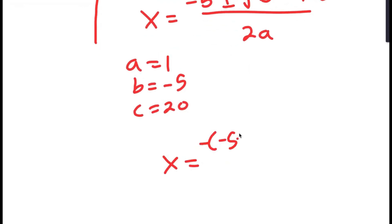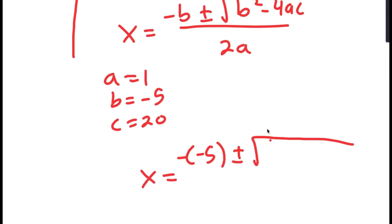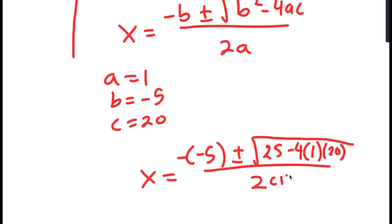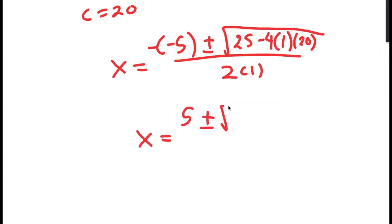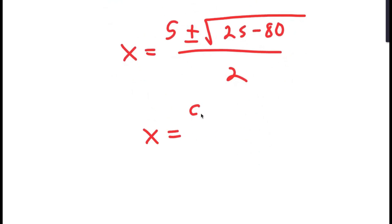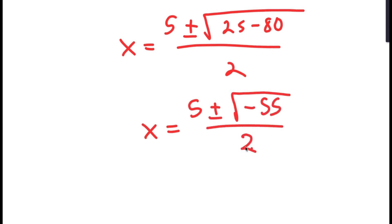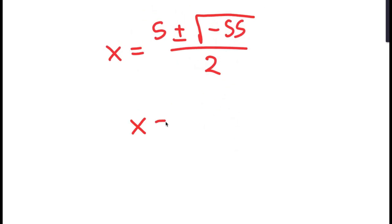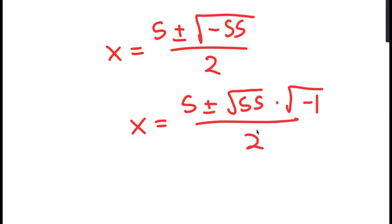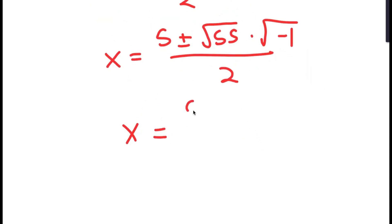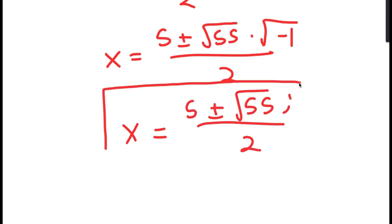Substituting, x equals negative(−5) plus or minus the square root of (−5) squared minus 4 times 1 times 20, all over 2 times 1. That gives 5 plus or minus the square root of 25 minus 80 over 2, which equals 5 plus or minus the square root of negative 55 over 2. This is equal to 5 plus or minus the square root of 55 times i over 2, since the square root of negative 1 equals i. So x equals (5 ± √55 · i) / 2 are two more solutions.